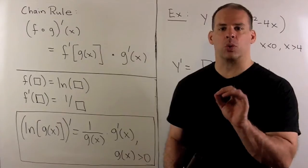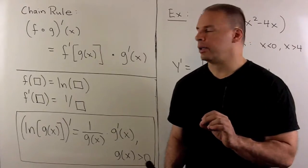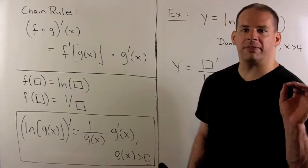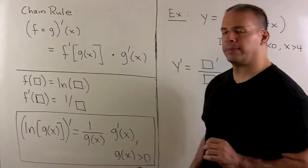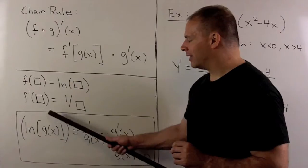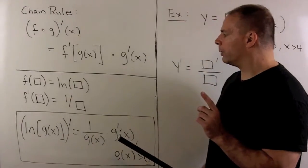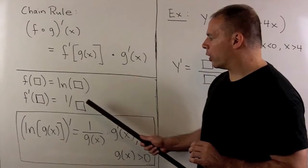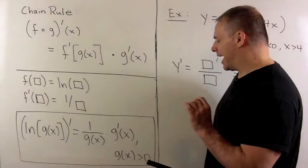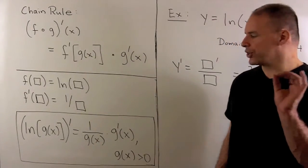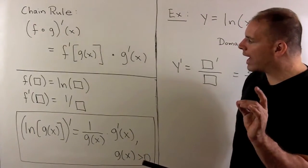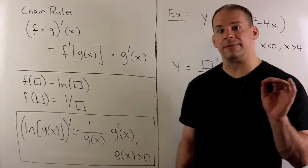We'll apply the chain rule when f equals natural log. If f of box equals natural log of box, then f prime of box equals one over box. So if I take the derivative of natural log of g of x, g of x is in the box, and the derivative is one over g of x multiplied by g prime of x. We must also require that g of x is greater than zero; otherwise our original function is not defined at x.